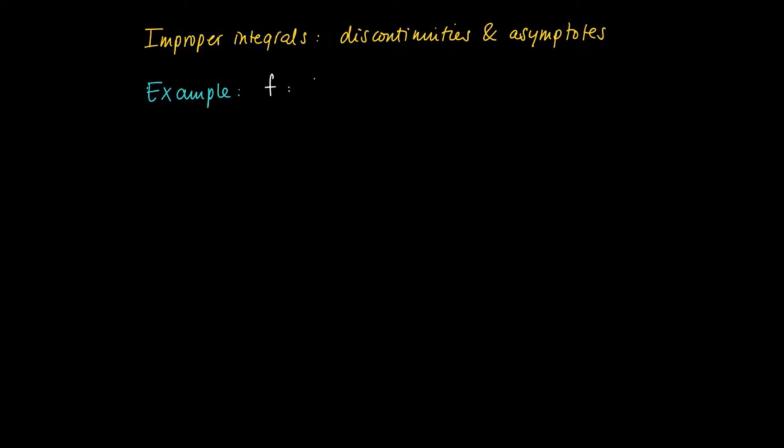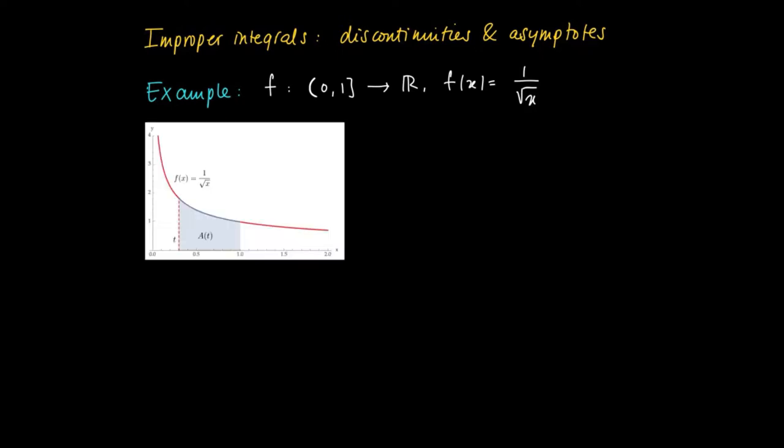As an example, consider the following function, which is defined on the left-open interval (0,1], right closed, and f(x) is equal to 1 over the square root of x. So here is the graph of the function. We see that we have a vertical asymptote at x equals 0.